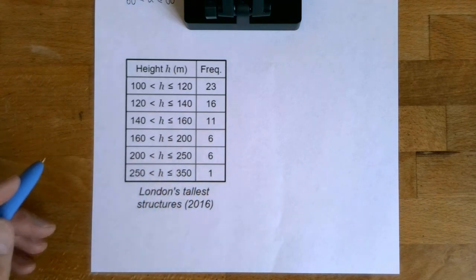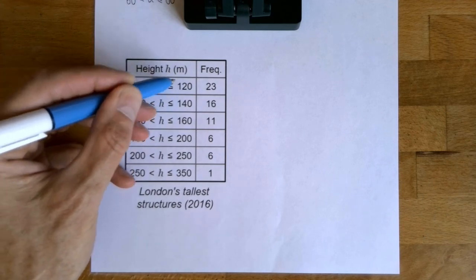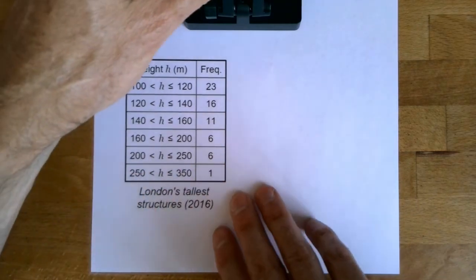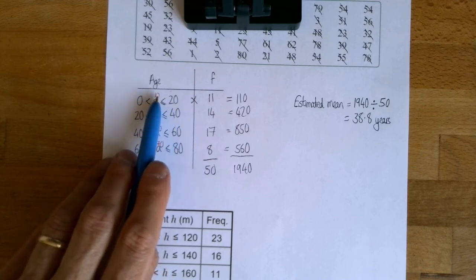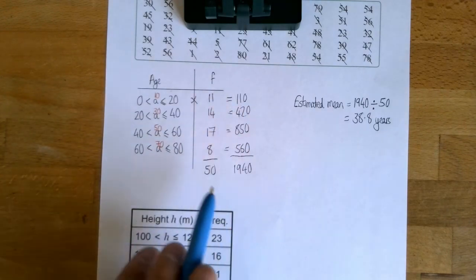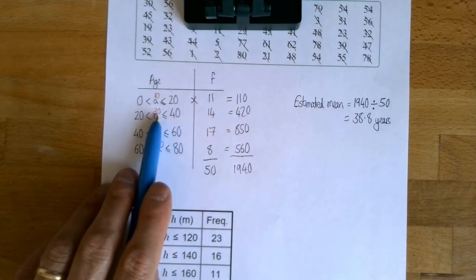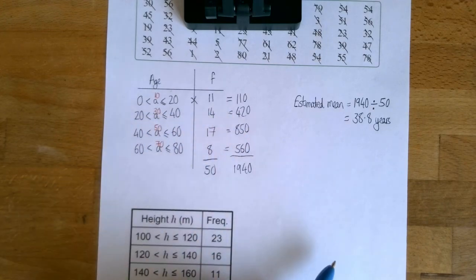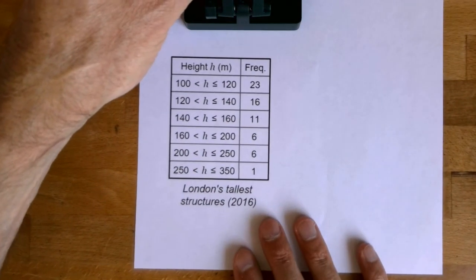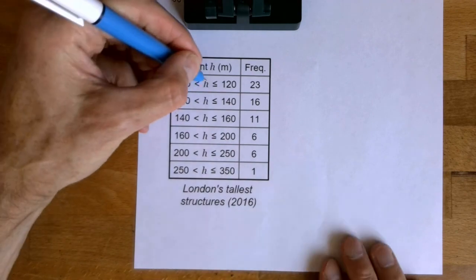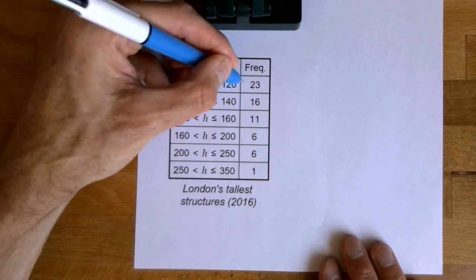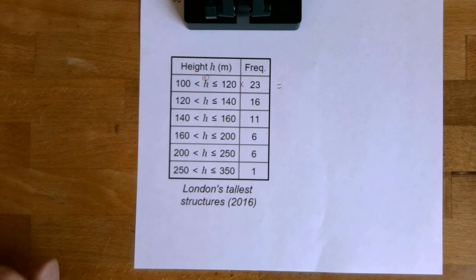We can still use the trick that I've shown you. You've just got to be careful when you work out the middle of the group to use in the multiplication trick. Here, where the group went from 0 to 20, I used the middle of the group in my multiplication trick. I did 10 times 11 and that gave me 110. The middle of the 20 to 40 group was 30. 30 times 14 gave me 420. So you've got to be careful when you work out the middle of your groups. I'll start you off. The first group, the middle is 110. So you're going to do 110 times 23. But you've just got to be careful because not all the groups are 20 metres wide.